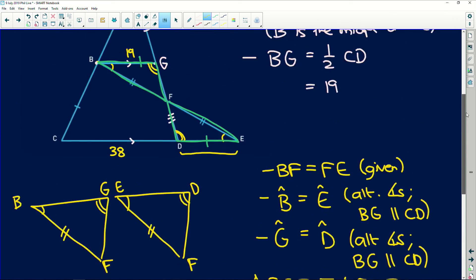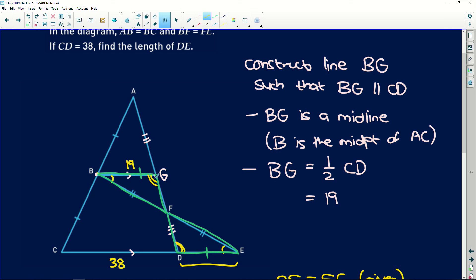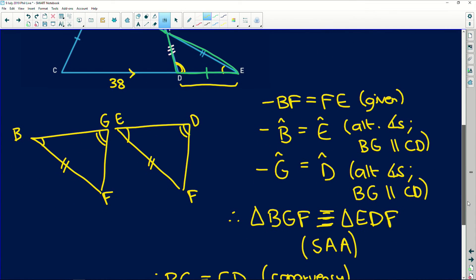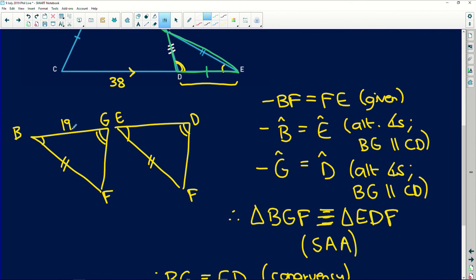Now remember, right at the beginning, because we constructed this line here, this BG parallel to CD, we established that BG is equal to half of that length, CD. Why? Because of midpoint theorem. That should have been a reason there. Midpoint theorem. So we established that BG is equal to 19 units. It's half the length of that CD baseline. And now because we've got congruent triangles, these triangles are exactly the same as each other. We know that ED is equal to 19 units.